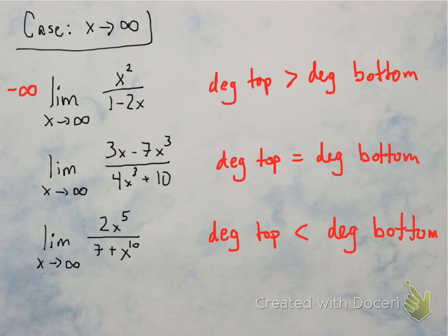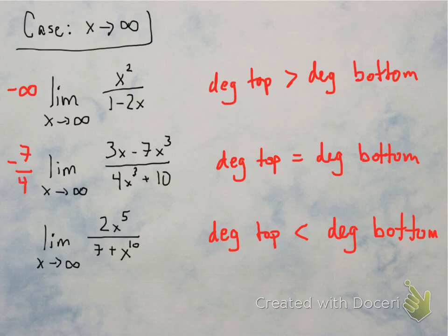In the first case, you get negative infinity — the top is way bigger than the bottom, so you get infinity or negative infinity. The top gives infinity — it's positive. But on the bottom you get a negative number, and positive divided by negative is negative, so the answer is negative infinity. In the second case, the degrees are equal, so divide the coefficients: negative 7 on top and 4 on bottom, giving negative 7 over 4. In the last case, the bottom is way bigger than the top, so — like 1 divided by infinity — you get 0.